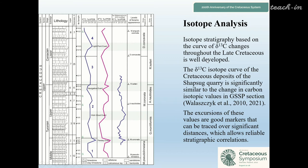Now, data about isotope analysis. Isotope stratigraphy based on the curve of δ¹³C changes throughout the Late Cretaceous is well developed. The δ¹³C isotope curve of the Cretaceous deposits of Shapsuk quarry is significantly similar to the changes in this data in the GSSP section. The excursions of these values are good markers that can be traced over significant distances, allowing reliable stratigraphic correlation. You can see one, two, and three boundary and isotope stratigraphy markers.